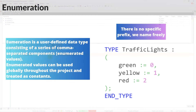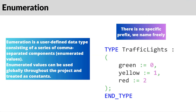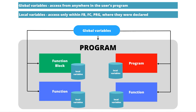To summarize: an enumeration is a user-defined data type consisting of comma-separated enumerated components that can be used globally throughout the project and treated as constants. In Codesys documentation there is no specific mandatory prefix, but I use capital E underscore for enumeration names in my projects depending on project conventions.